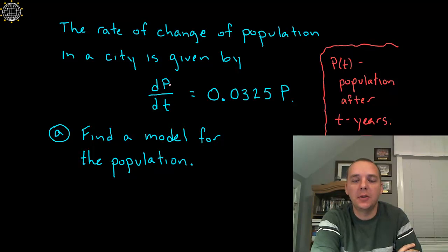So capital P is representing the population after a certain number of time, and on the left hand side we see a derivative, which would be the change in population over time. And what we notice is that that's equal to this scalar multiple, 0.0325 times whatever the population is.